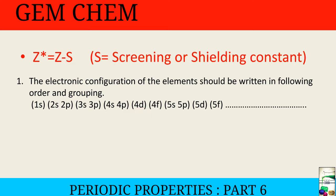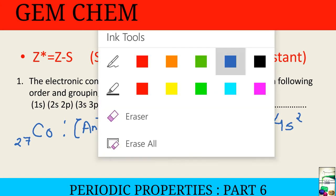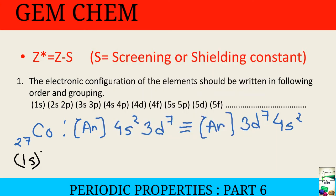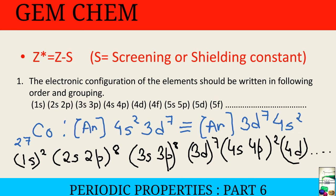Now we will see the grouping for cobalt. Cobalt has atomic number 27, so its configuration is [Ar] 3d⁷ 4s². When we group it according to Slater's rule, we get: (1s²)(2s 2p⁸)(3s 3p⁸)(3d⁷)(4s 4p²) and so on. Here 4s 4p and 3d are occupied, so we stop there.